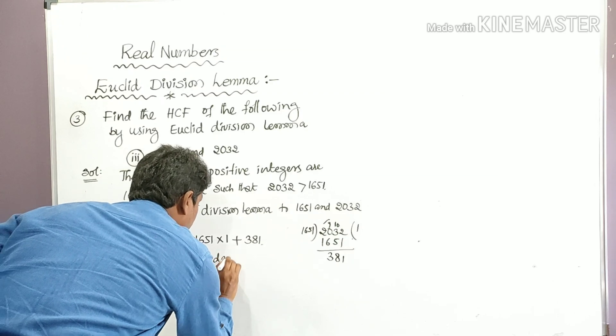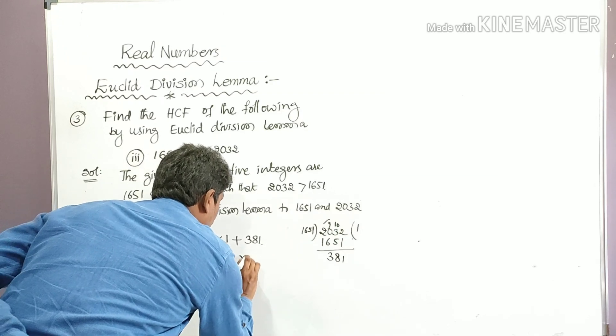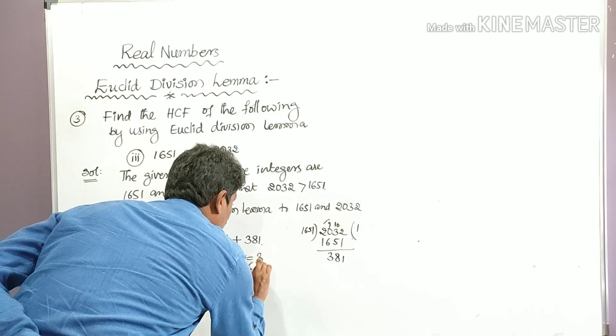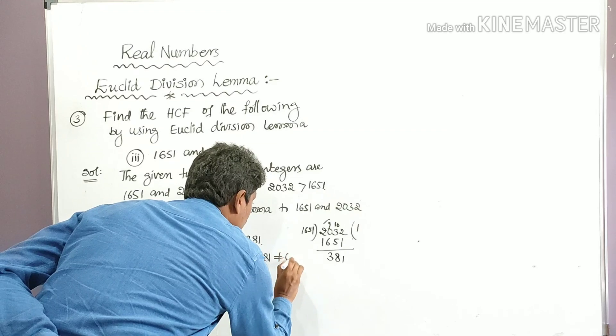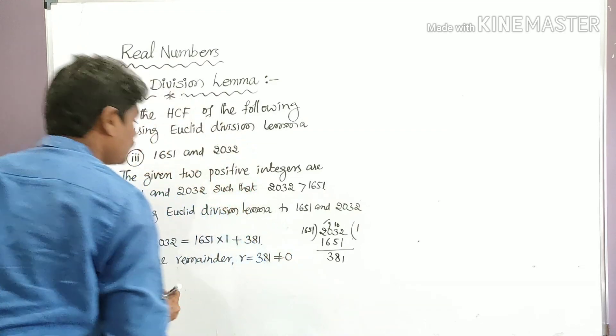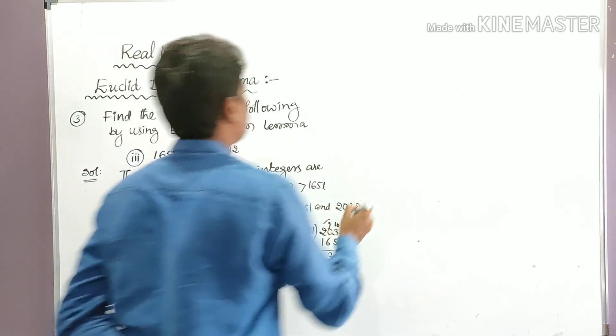Since the remainder r = 381, which is not equal to 0, we have to apply Euclid's Division Lemma again to the divisor and the remainder.